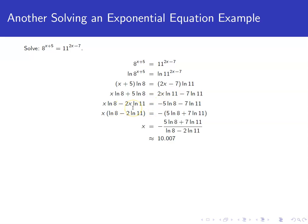We'll subtract the 2x natural log of 11 over to the left-hand side, subtract the 5 natural log of 8 to the right-hand side. That allows us to factor out the common factor of x on the left-hand side, which leaves us with natural log of 8 minus 2 natural log of 11.